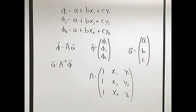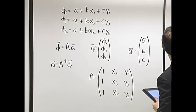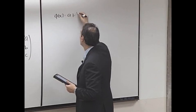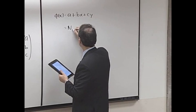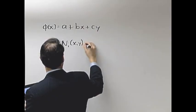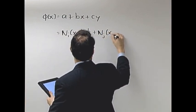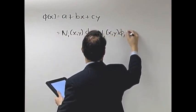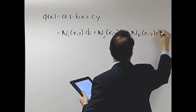Let me write down what we get out of this. Invert that matrix and you're going to be able to find a, b, c. And let me just show you what this φ of x is. Remember, it's a plus bx plus cy. And what we're going to find here is that this is Ni(x,y)φi plus Nj(x,y)φj plus Nk(x,y)φk.